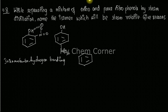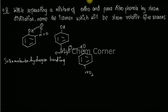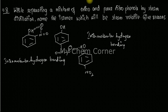In a beaker containing paranitrophenol, one molecule will come in contact with another paranitrophenol molecule. When we expand the structure, hydrogen bonding forms between two different paranitrophenol molecules — this is intermolecular hydrogen bonding between two molecules.